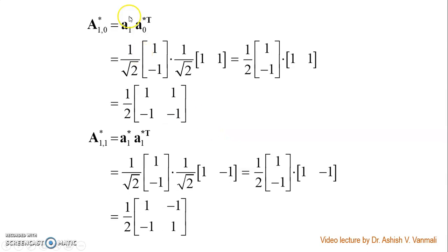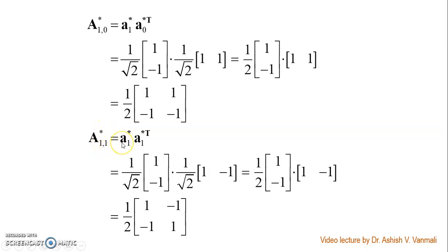The third basis image A_10 conjugate is vector A_1 conjugate multiplied with vector A_0 conjugate transpose, giving the result 1/2 times [1, 1; -1, -1]. The last is A_11 conjugate, where K and L are both 1: vector A_1 conjugate multiplied by vector A_1 conjugate transpose. Substituting, we get the result 1/2 times [1, -1; -1, 1].